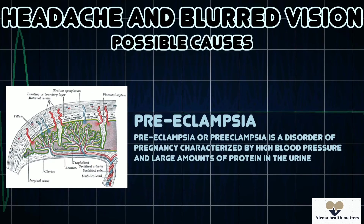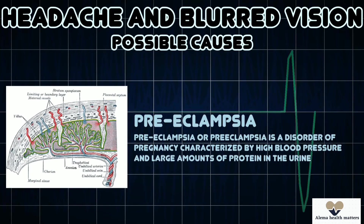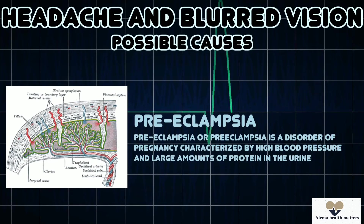Preeclampsia can also cause headache or blurred vision. Preeclampsia is a disorder of pregnancy characterized by high blood pressure and large amounts of protein in the urine.